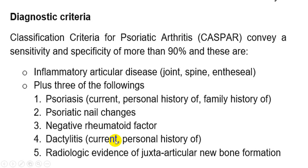Regarding diagnostic criteria, the CASPAR classification criteria for psoriatic arthritis have a sensitivity and specificity of more than 90%. These include inflammatory articular disease — involvement of joint, spine, or enthesis — plus three of the following: psoriasis (current, family history, or previous personal history); psoriatic nail change; negative rheumatoid factor; dactylitis (current or history); and radiological evidence of juxta-articular new bone formation.